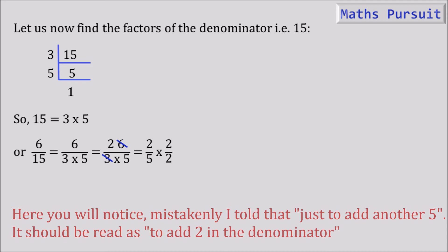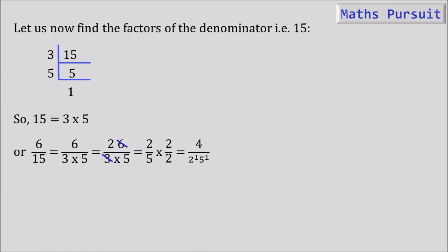We already know that if we do the same multiplication in the numerator and denominator, it will have no effect. So for that reason, I am doing this calculation. Now, after multiplying 2 in the numerator and 2 in the denominator, I am getting 4 by 2 to the power 1 into 5 to the power 1.